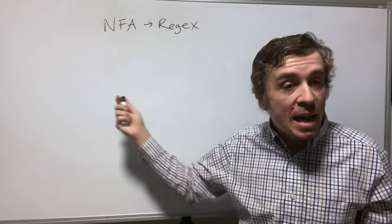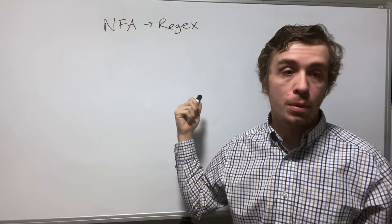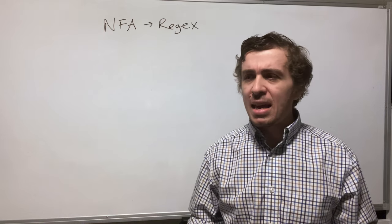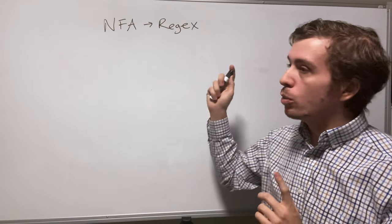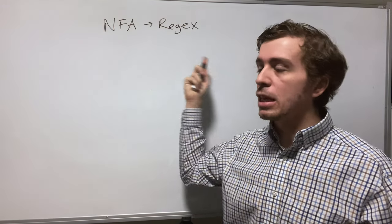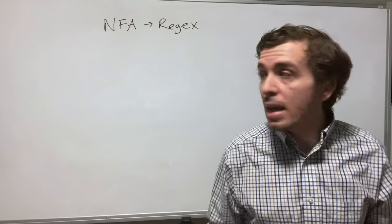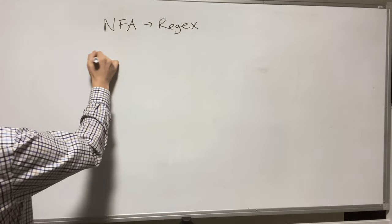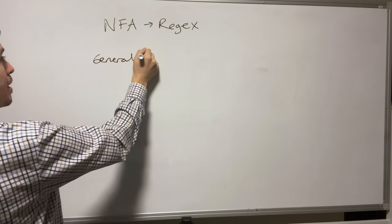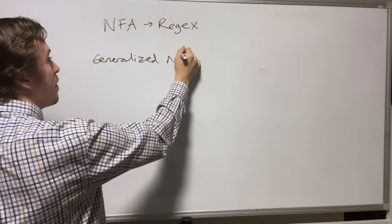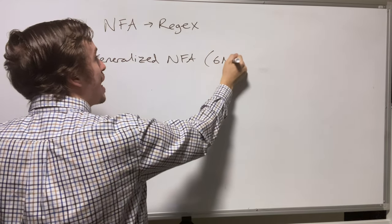So we're going to be looking at the NFA to regex conversion process today. I've always wanted to do that as a kid. Anyway, we need to have an intermediate object because we can't necessarily do this directly. How does that work? So that intermediate object is called a generalized NFA, and that's more commonly abbreviated as a GNFA. How many acronyms do we need to memorize?